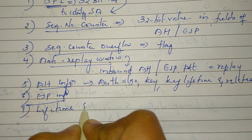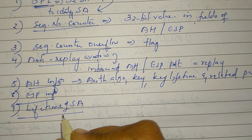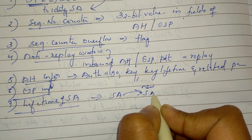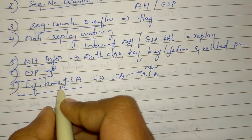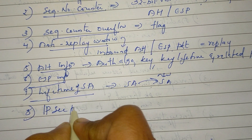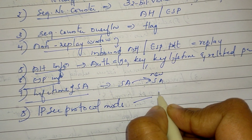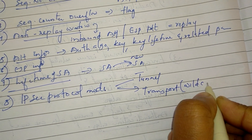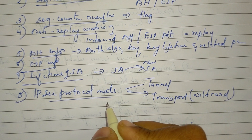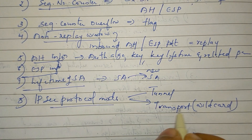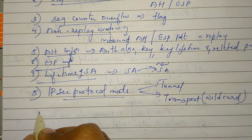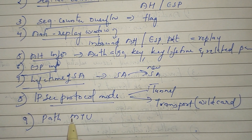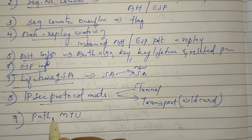The seventh parameter is the Lifetime of the Security Association — when it expires, a replacement security association takes over. Then there is the IP Security Protocol Mode code, covering Tunnel mode and Transport mode, which specifies the mode used for AH and ESP.